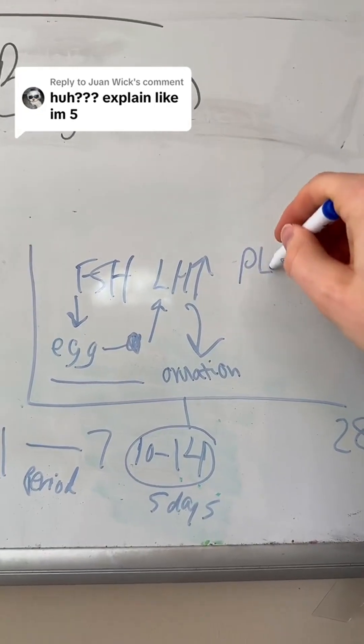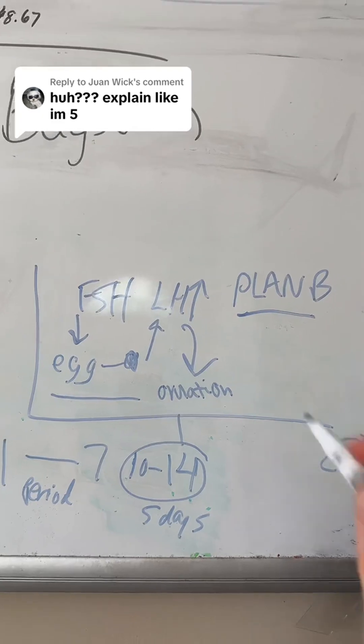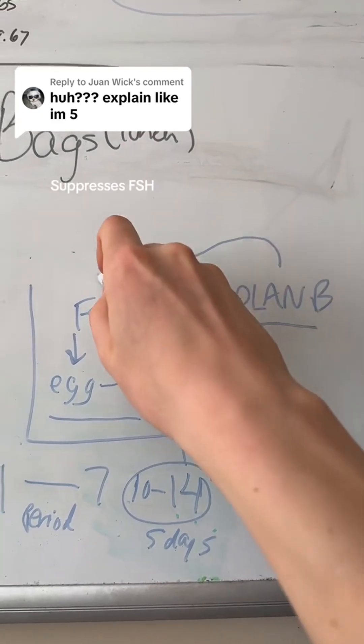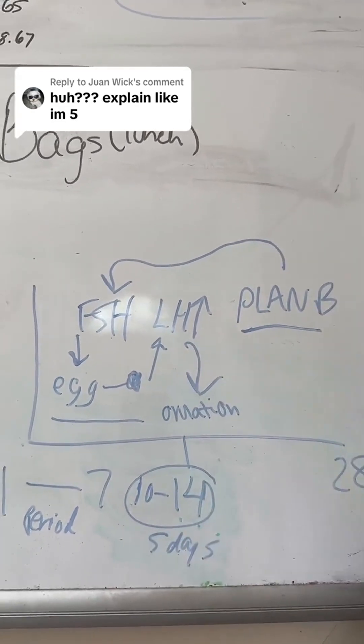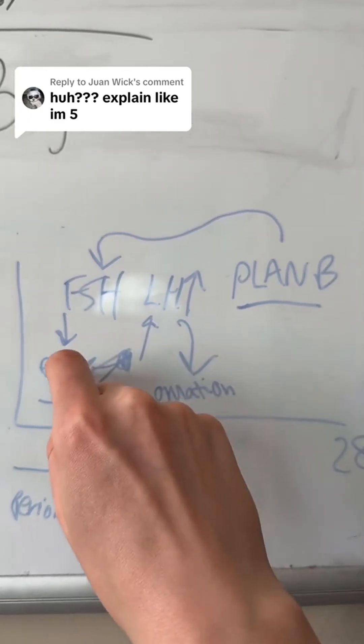What plan B does - plan B is a synthetic form of progesterone. If you take it, it will cause FSH to inhibit, so stop, which will halt the development of the egg.